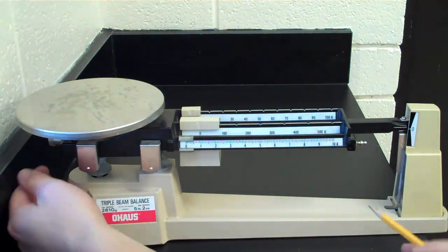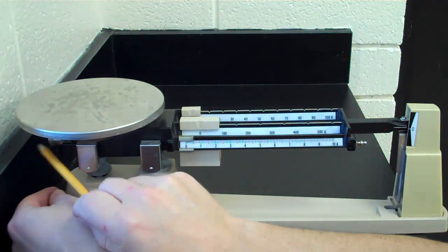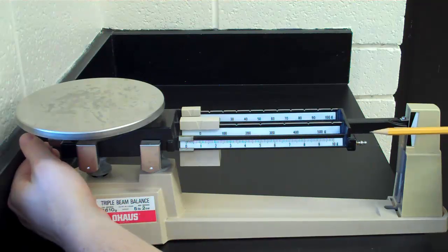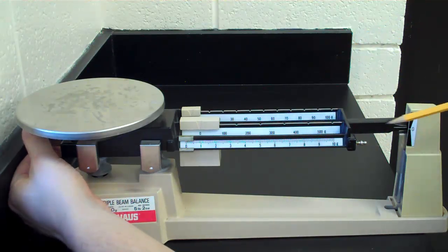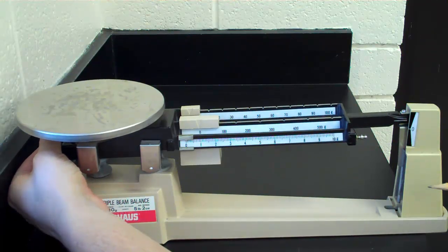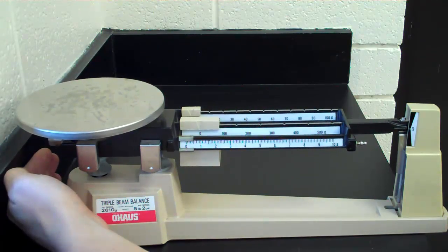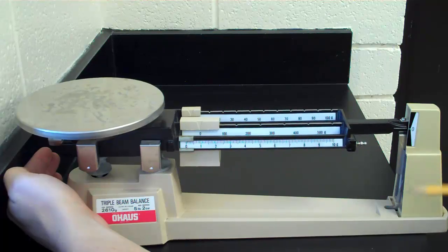This one is not, so we want to use this fine adjustment knob over here. If it's too high, the line on this arm here is too high, we're going to turn that adjustment knob toward us, and that will bring it down a little bit.